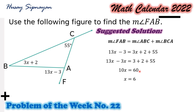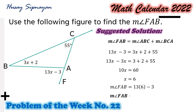Since we are getting the value or the measure of angle FAB, we are going to substitute x equals 6 into 13x minus 3. So we have the measure of angle FAB is equal to 13 times 6 minus 3. 13 times 6 is 78, minus 3 is equal to 75. So the measure of angle FAB is equal to 75 degrees.